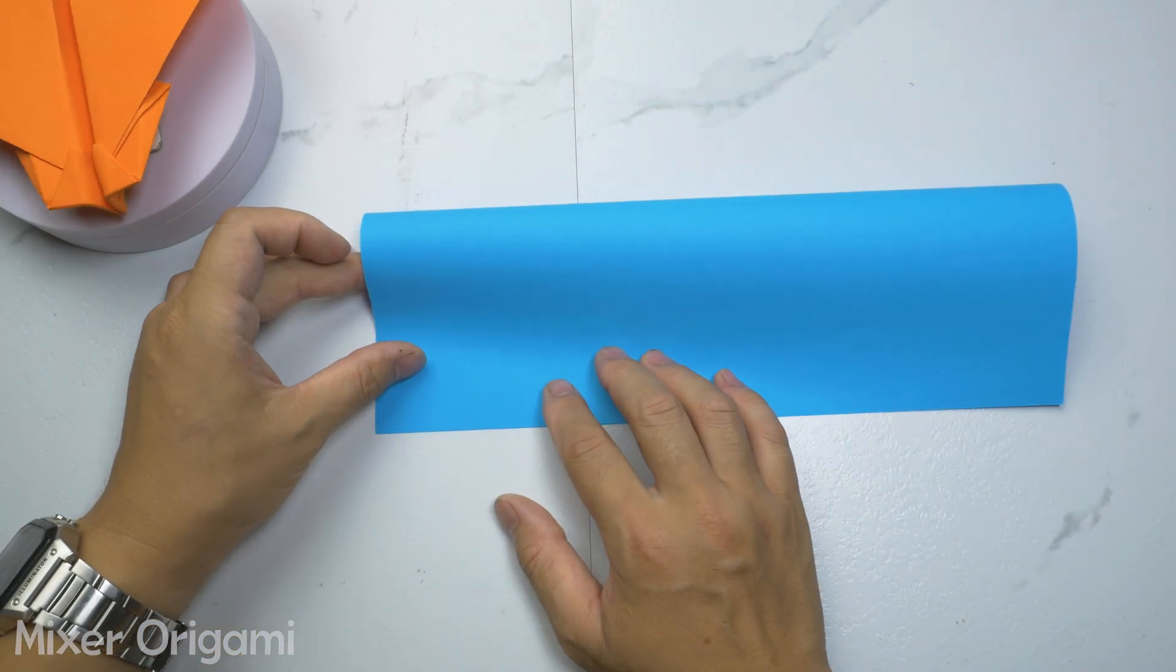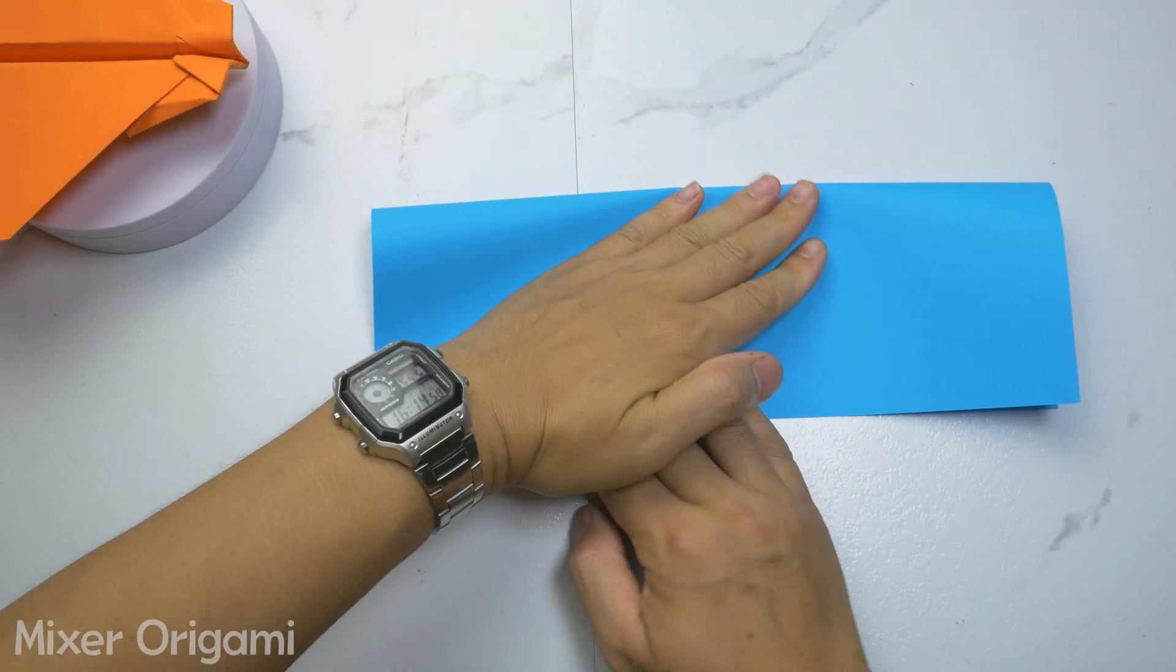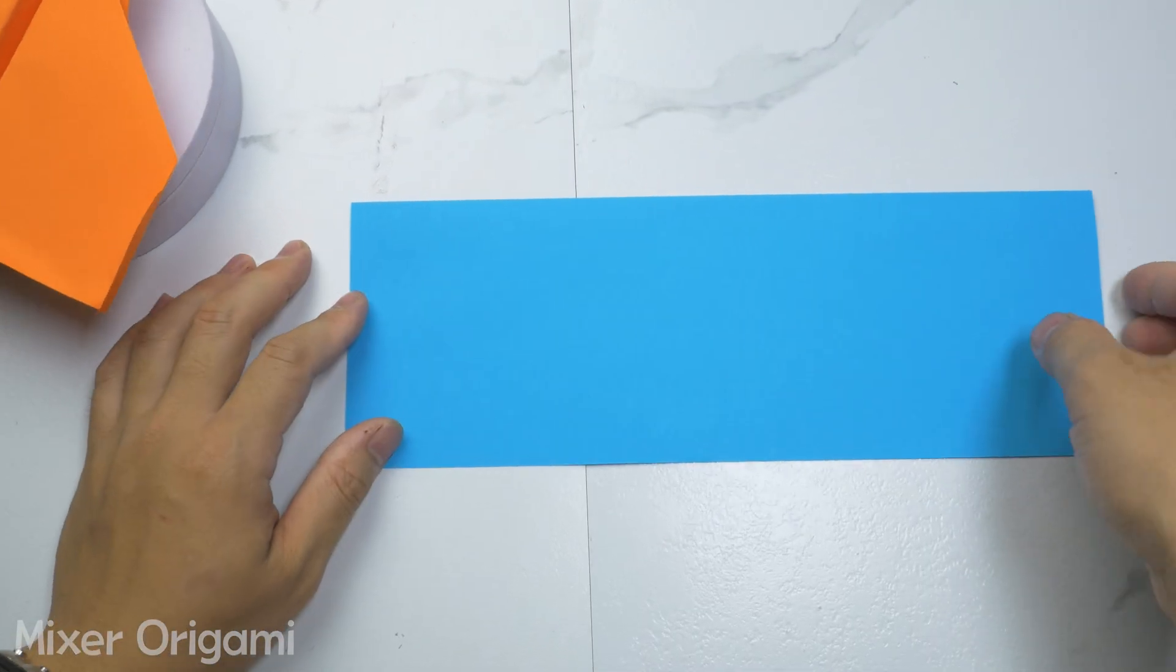Step 1. Fold the paper in half lengthwise. Make sure to fold both sides evenly and crease the fold with your finger as I'm doing.